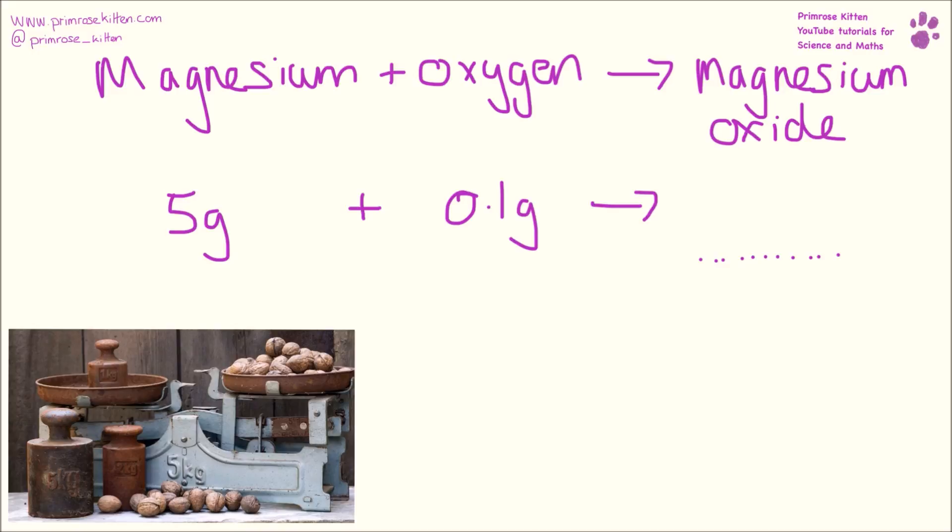If we have 5 grams of magnesium and 0.1 grams of oxygen, we are going to make 5.1 grams of magnesium oxide.